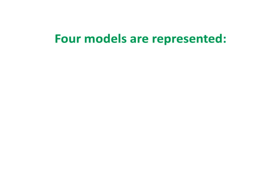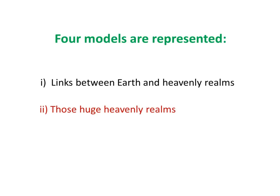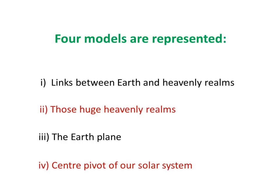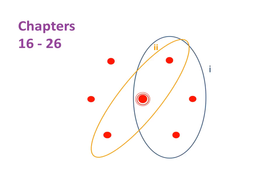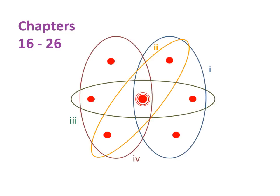So where and what is Jambodvip? Jambodvip explains there are four basic models here. Links between Earth and Heavenly Realms. Those huge Heavenly Realms. The Earth Plane. And a centre pivot of our Solar System. Within this part of the Fifth Canto, there are a number of separate facts and figures, represented here by red dots. Each dot here is relevant to two or three of the models. The models cover different views, levels of consciousness, and time periods. Now there is some crossing over, where some descriptions are relevant to more than one model. I suggest there are connections between the everyday sense perception and the multidimensional universe, and these models try to show that.